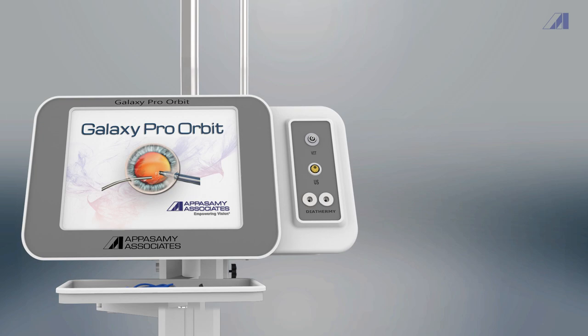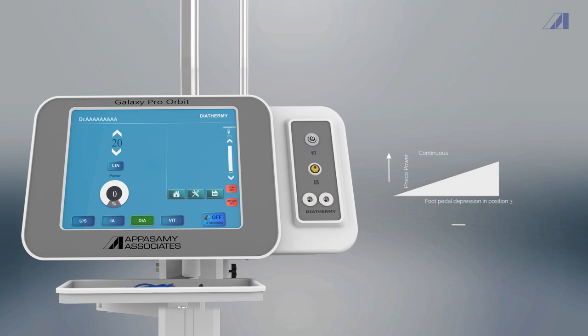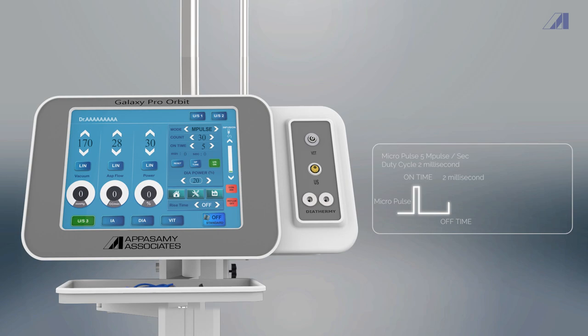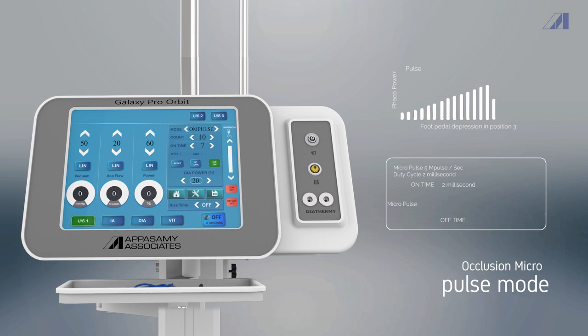The Galaxy Proorbit is designed with seven different FACO modes in which Impulse or cold FACO mode is considered most advantageous as it allows the user to customize the on time duration as per their requirement and provides crystal clear cornea without any wound burn. This mode maintains temperature at a lower level even when the surgeon works with a higher grade of cataract.